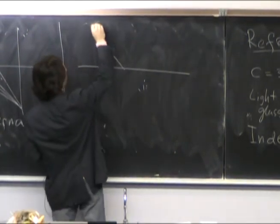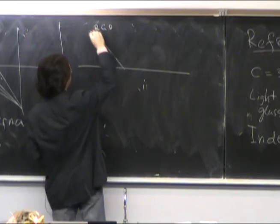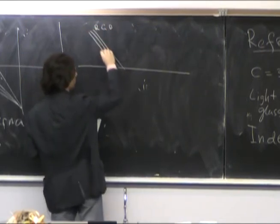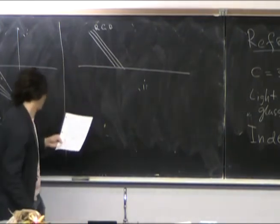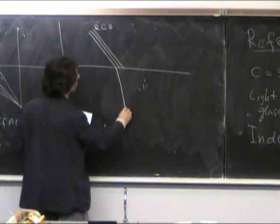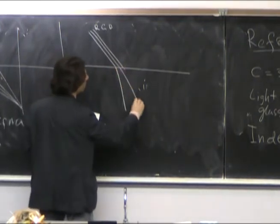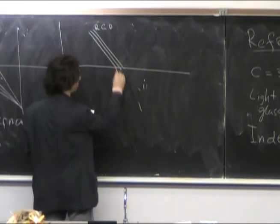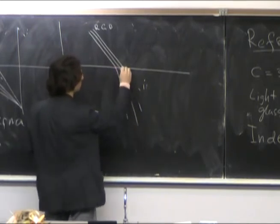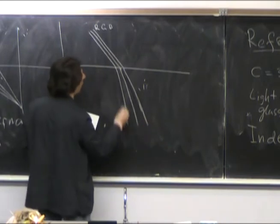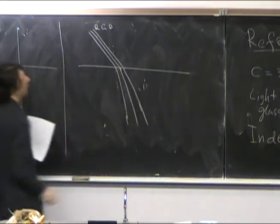So if I send red, green and blue light here, they will diverge and travel at a different angle on the other side.